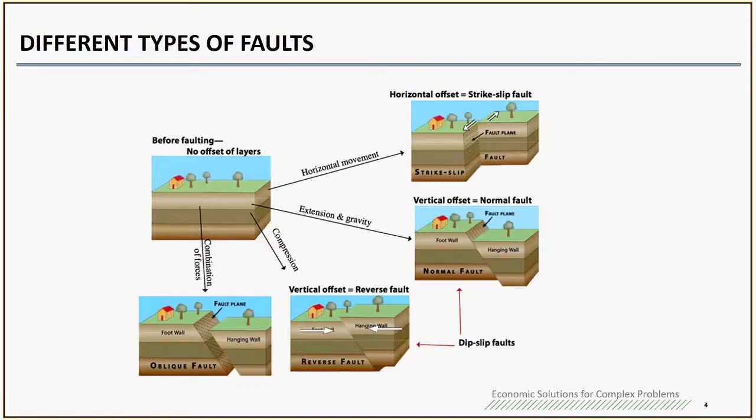There are four major different types of faults: strike-slip faults, normal faults, reverse faults, and oblique faults. For strike-slip faults, the two ground plates move in a horizontal direction.